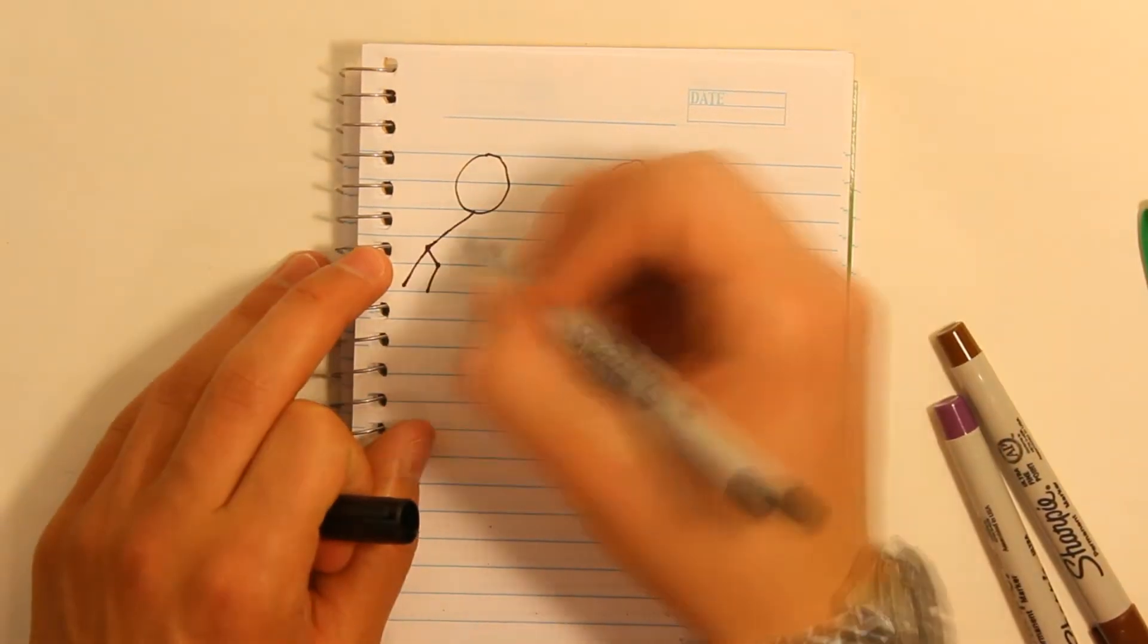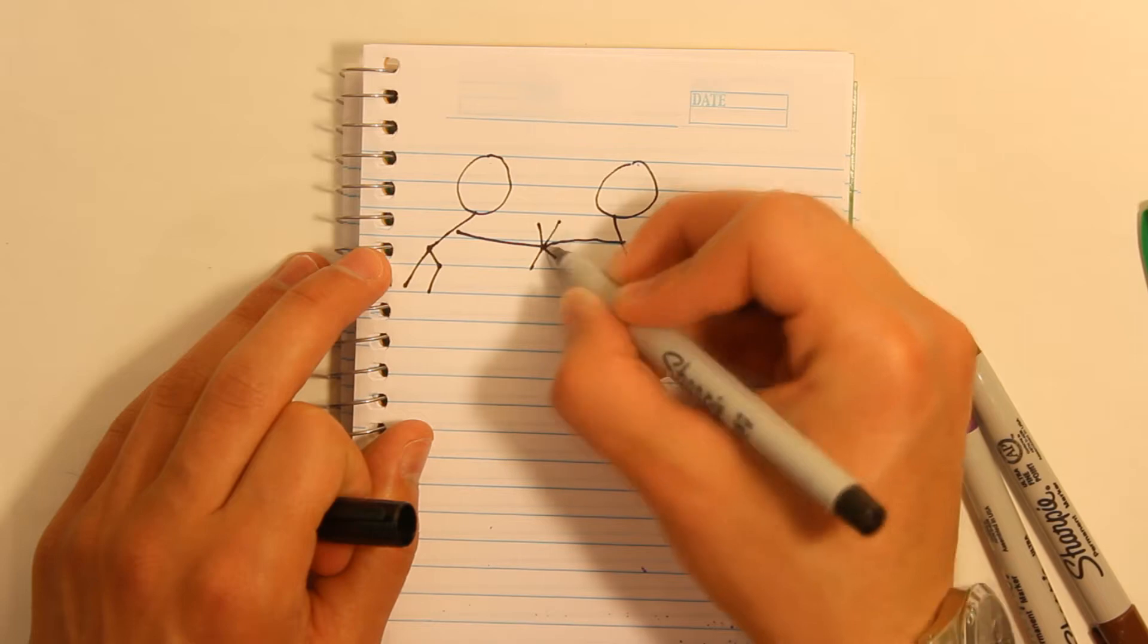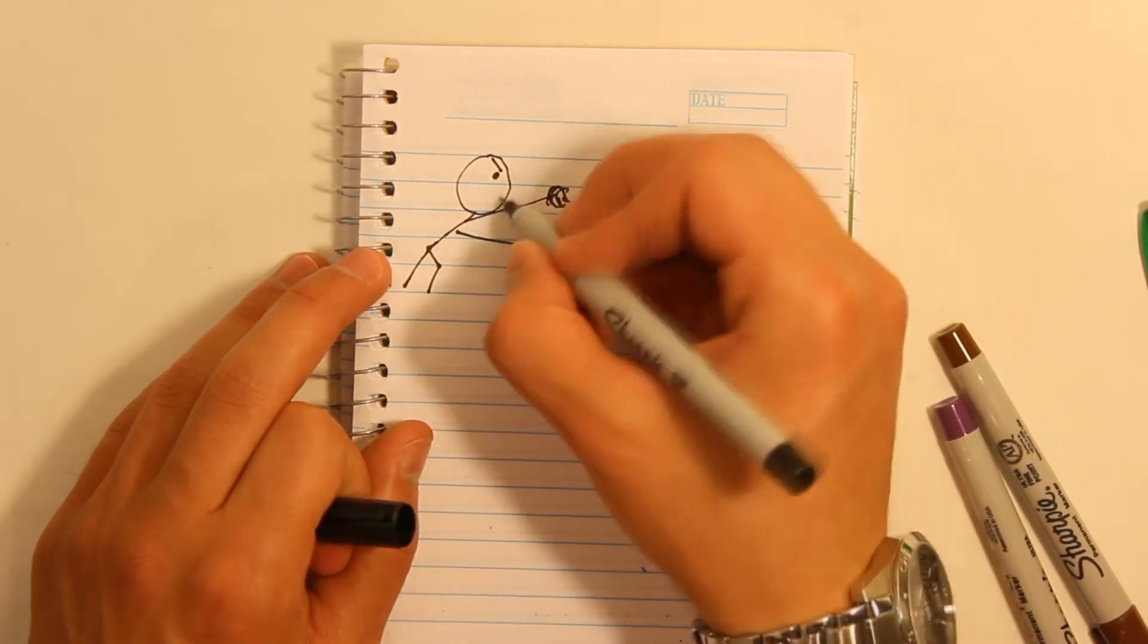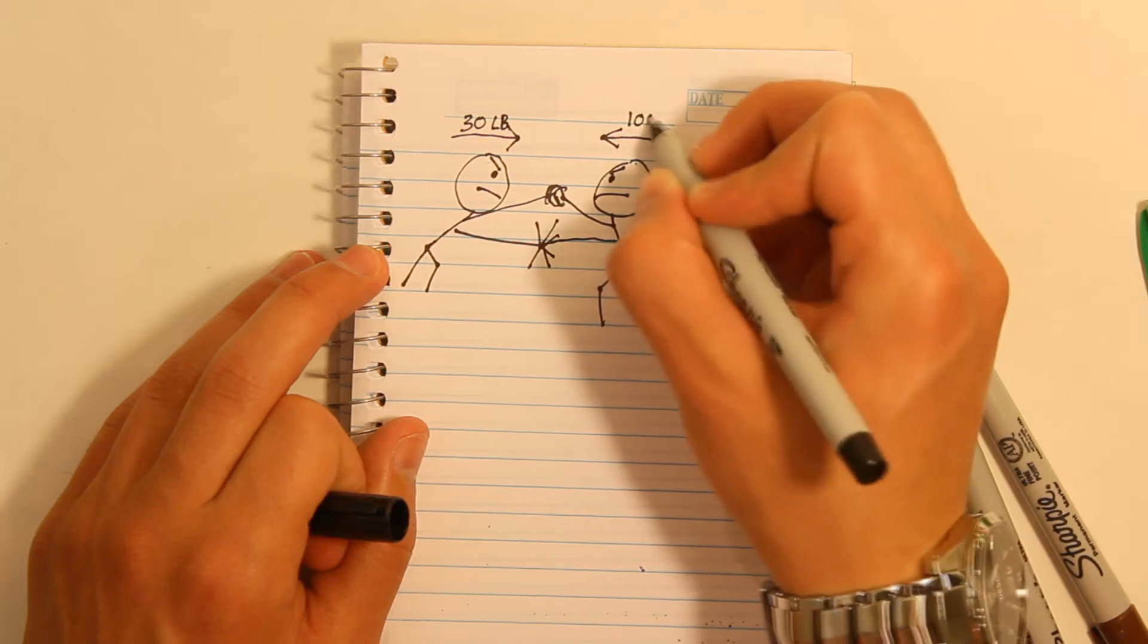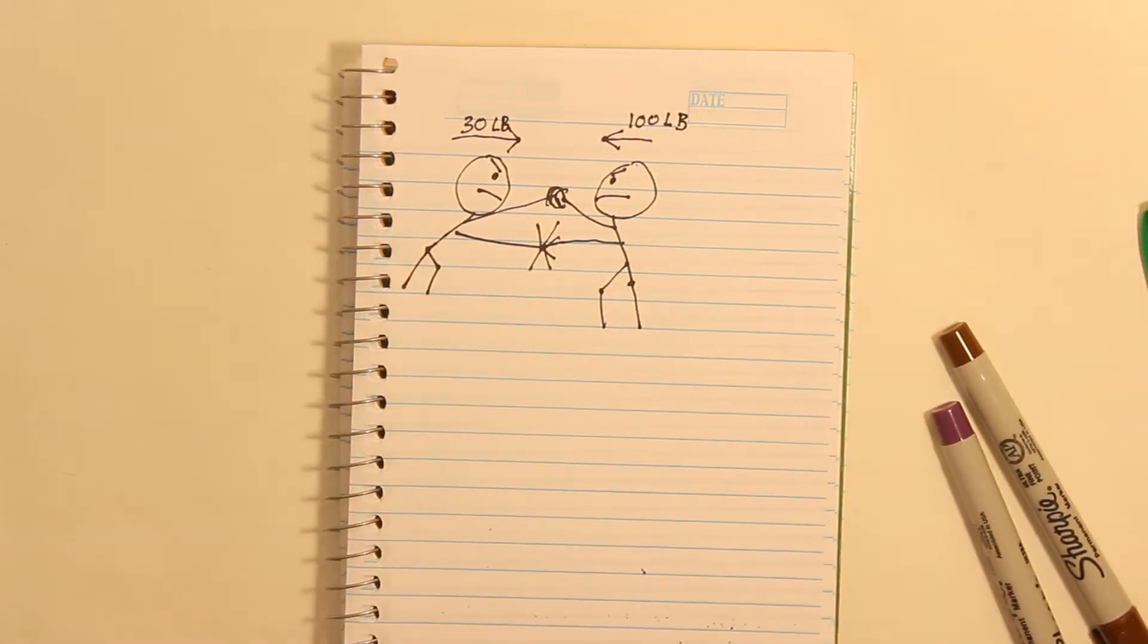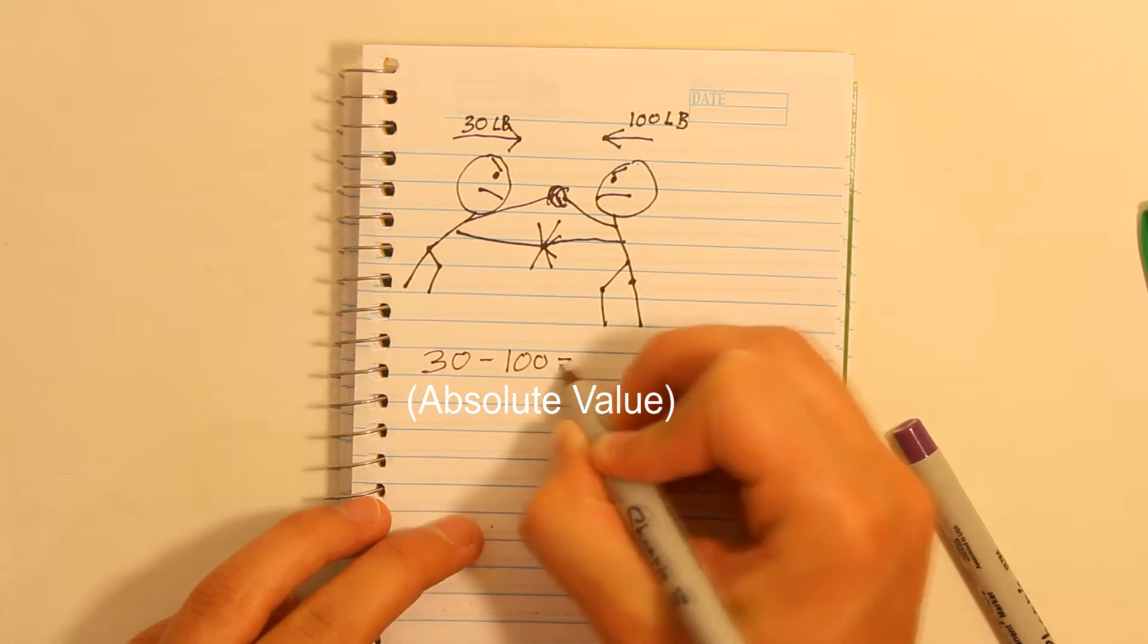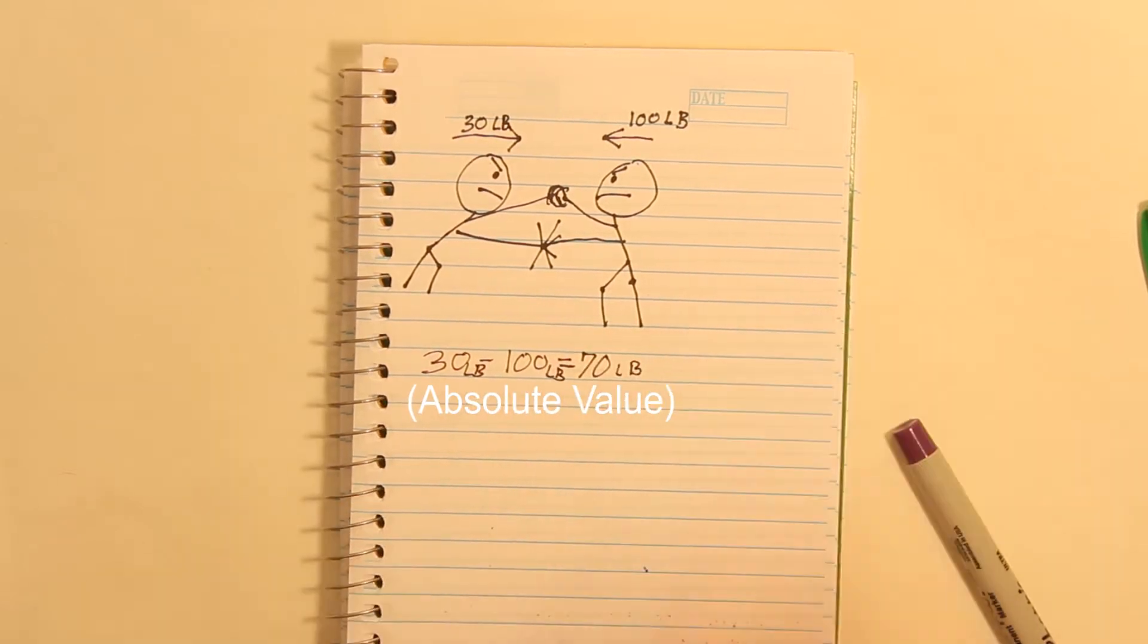Here's an analogy. Think of two people pushing on each other. One person is not very strong and is pushing with 30 pounds of force. The other person, however, is really strong and is pushing with 100 pounds of force. The difference in energy potential between these two angry people is 70 pounds.